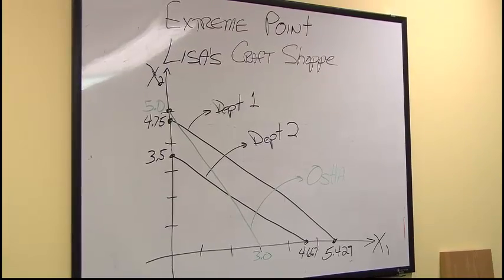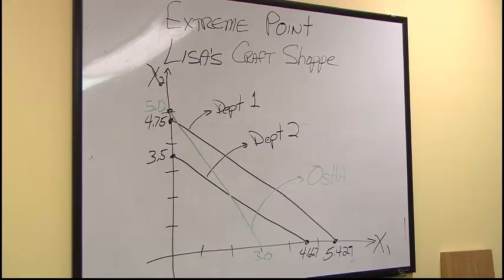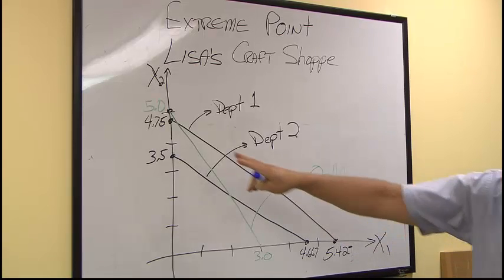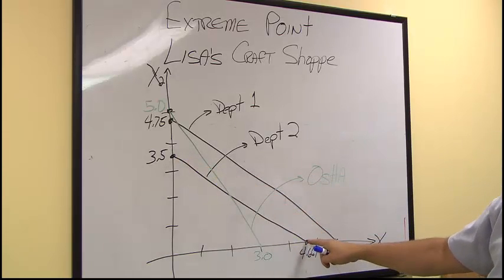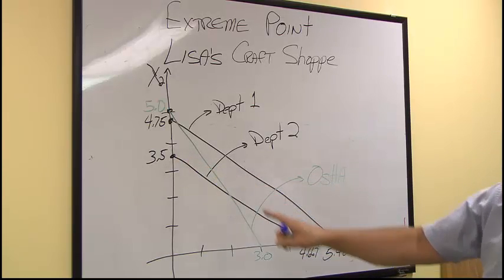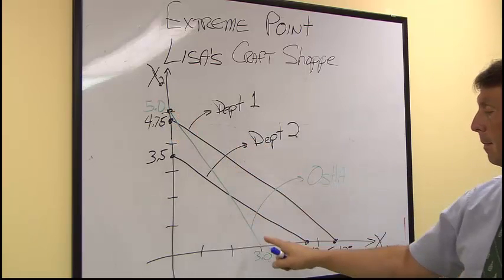Here, we have graphed out all three constraints. The constraint for Department 1, the constraint for Department 2, and in green, the third constraint for the OSHA requirement.